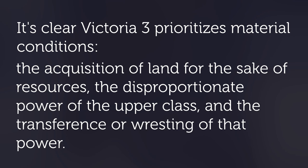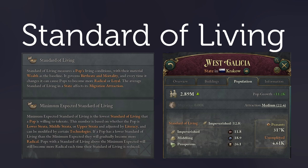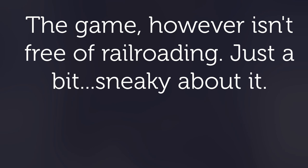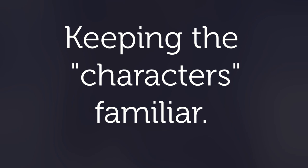Circumventing the question of AI efficacy in favor of one about developer intent: it's clear that Victoria 3 prioritizes material conditions — the acquisition of land for resources, the disproportionate power of the upper class, and the transference or resting of that power. It takes a materialist lens to history as did its predecessor. Nowhere is this more apparent than the standard of living value and its key position — so much of gameplay amounts to enriching your country, and more than the coffers, enriching your people.